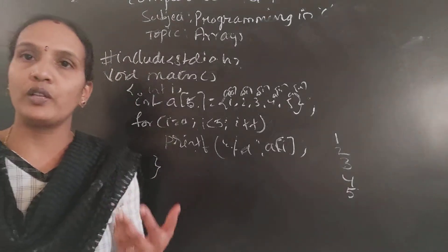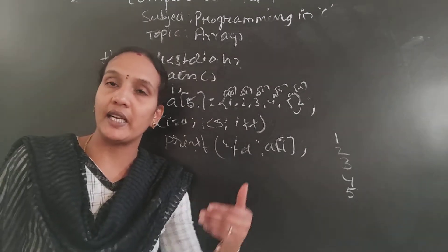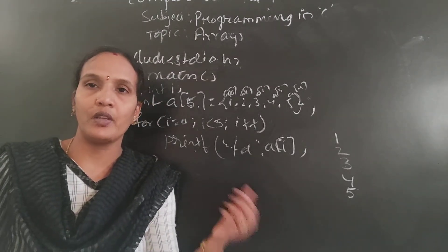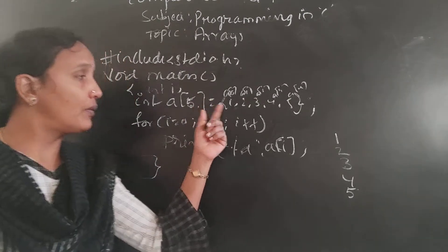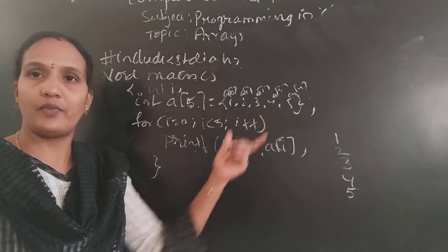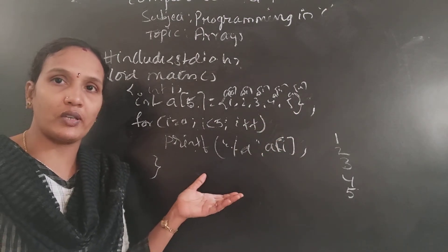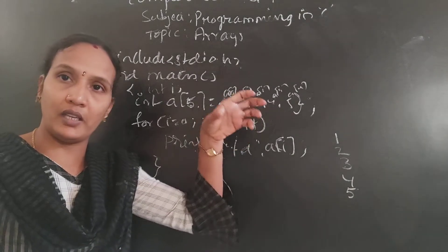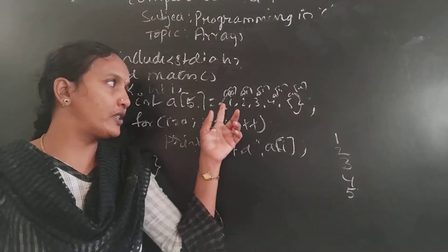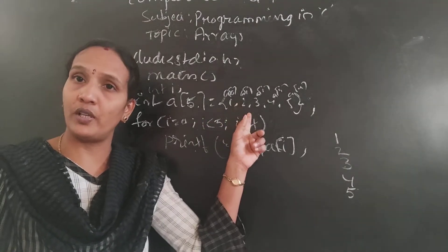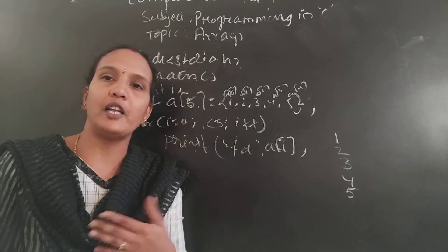So if you want to print more than one element at a time without writing a printf statement for each and every value, we take the help of loops. So here, we are printing each and every element using a for loop. But what is the drawback? Whatever values you are assigning into the array, all the values are fixed — A of 0, A of 1, A of 2, A of 3, A of 4 are all fixed.